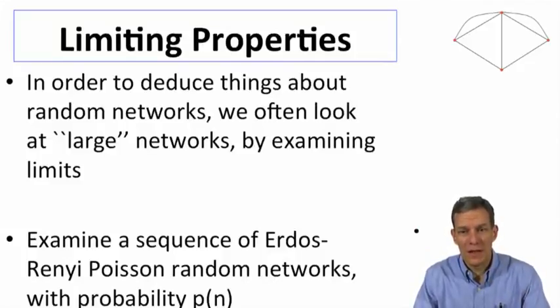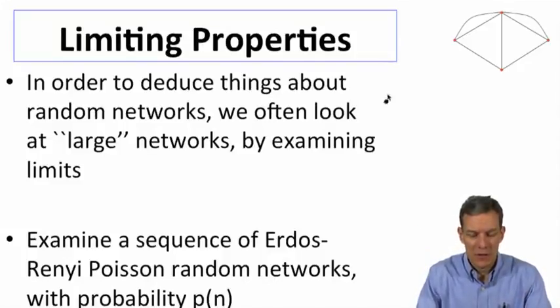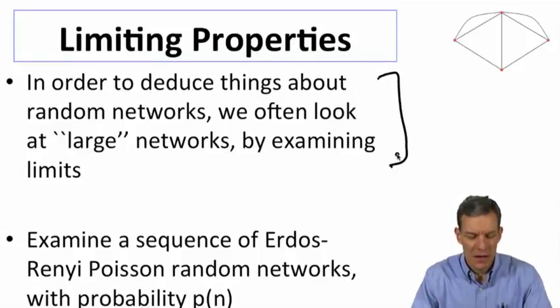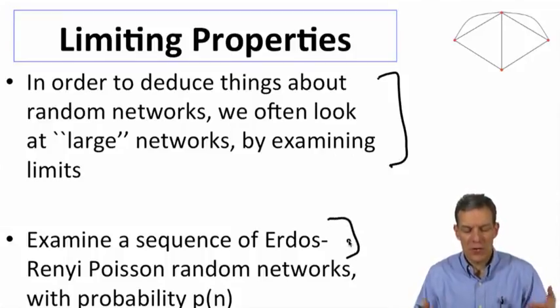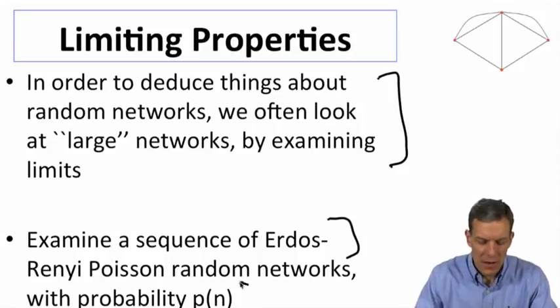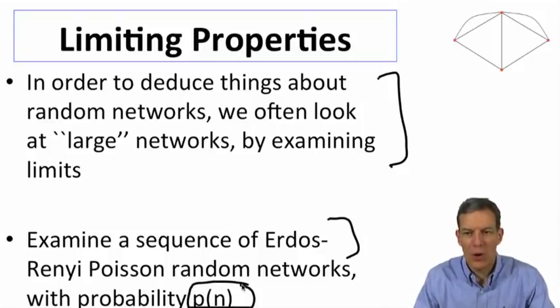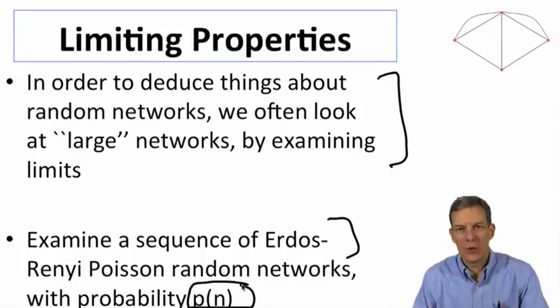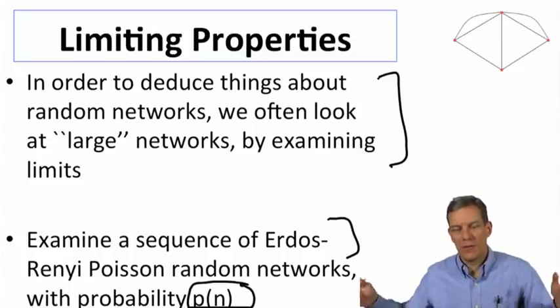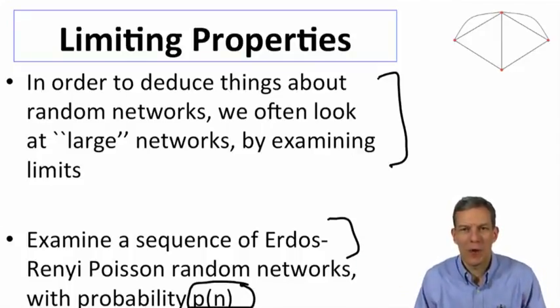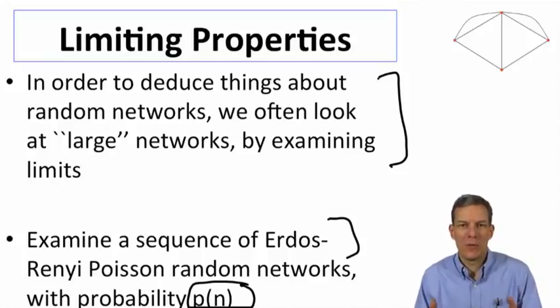So what we'll be interested in then is limiting properties. So one way to keep track of these things is then to talk about large N. So we can, for instance, look at a sequence of Erdős-Rényi, Poisson, or G(N,P) random graphs, and then have some probability, and then talk about what happens as a function of the size of the graph.